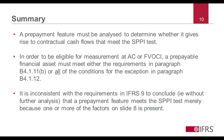Before I end this webcast, I'd like to summarize three main points. Consistent with all contractual terms of a financial asset, an entity must analyze a prepayment feature to determine whether it meets the SPPI test. Specifically, in order to be eligible for measurement at amortized cost or fair value through other comprehensive income, an entity must conclude that the prepayable financial asset either meets the requirements in paragraph B4.1.11b, set out on slide 5, or meets all of the conditions for the exception in paragraph B4.1.12, set out on slide 6. But it is not possible to conclude that a prepayment feature meets the SPPI test simply based on the factors set out on slide 8. IFRS 9 requires further analysis.